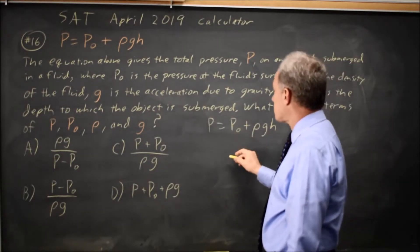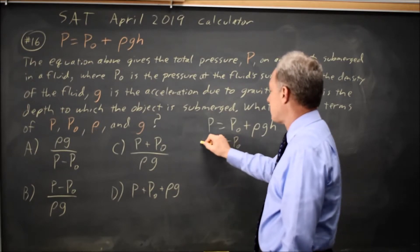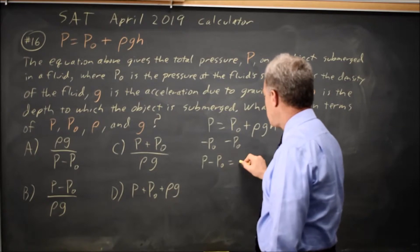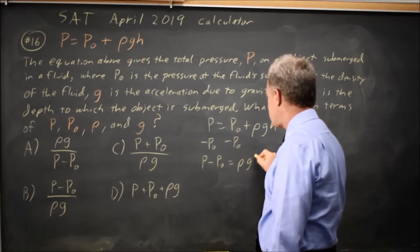Since we're adding P0, we're going to subtract P0 from both sides, which gives us P minus P0 equals rho times G times H.